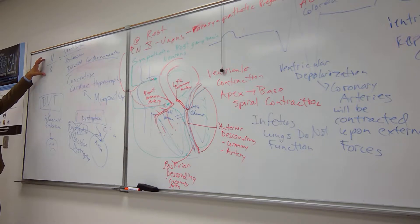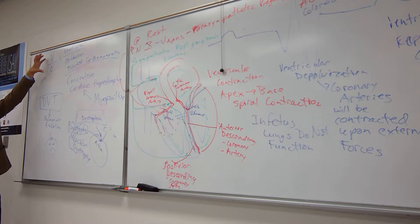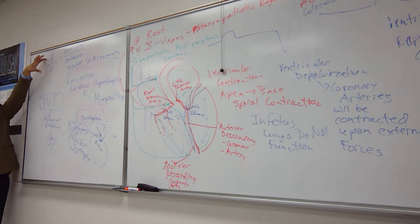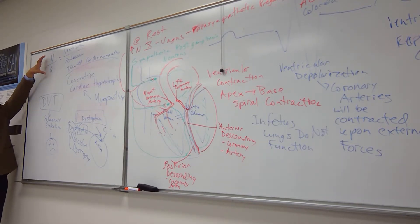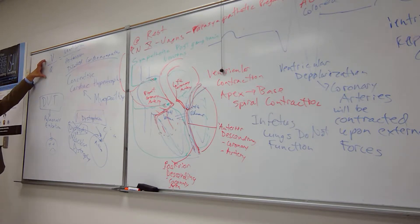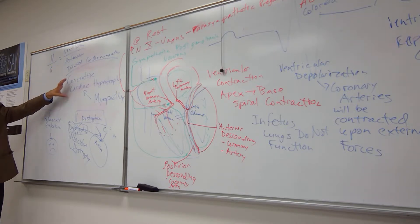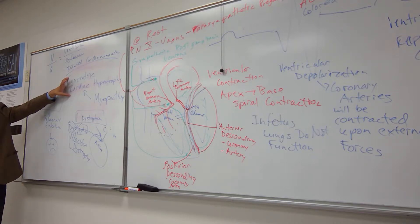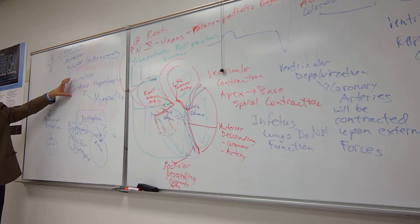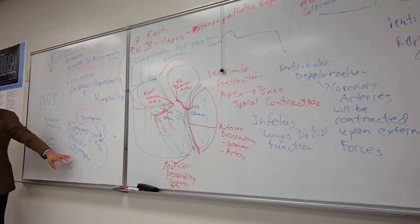The VQ ratio — ventilation per perfusion — is important because the lungs are in series. Disease in the lungs will cause issues for the heart. There's dilated cardiomyopathy where the heart gets overstretched, and concentric cardiac hypertrophy which can be a physiologically normal response to exercise due to increased venous return, though it also has a pathological form.